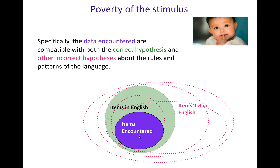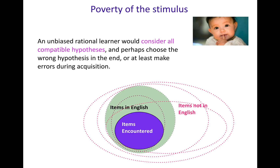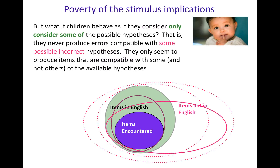The data encountered — the purple stuff — these are compatible with both the correct hypothesis, the correct generalization, and plenty of other incorrect hypotheses about the rules and patterns of the language. So an unbiased rational learner would consider all compatible hypotheses and maybe choose the wrong hypothesis in the end, or at least make errors during acquisition. Because the data themselves don't actually tell you what's the right one.